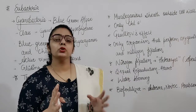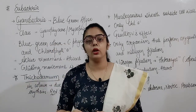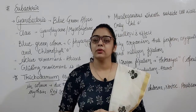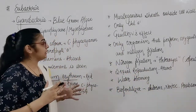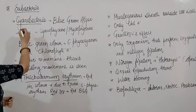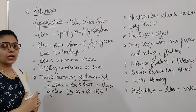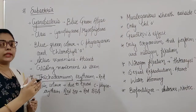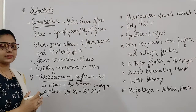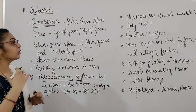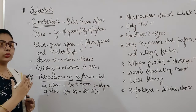So first of all, what is Eubacteria? That is the true bacteria which have a cell wall, and what is present in the cell wall? It is peptidoglycan. The first group of Eubacteria is cyanobacteria, and cyanobacteria are also known as the blue-green algae.